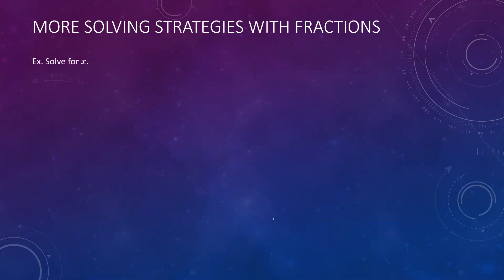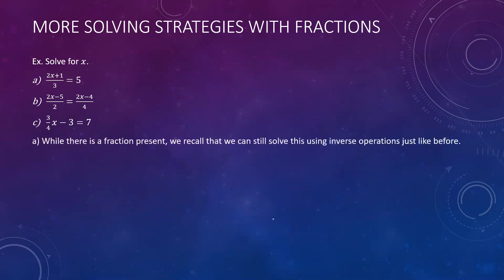A couple more strategies with fractions. I've picked different equations that all involve fractions, and I'll talk about the best strategy for each one. The first one: 2x plus 1 over 3 is equal to 5. This might seem complicated, but the easiest thing to do is to simply multiply by 3 first to eliminate the denominator. Then from there, just carry out normal operations.